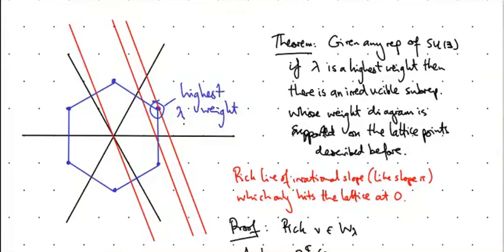Great. So what I want to use this for is to prove the uniqueness of the irreducible subrepresentation with a given highest weight. In other words, we want there to be only one possible subrepresentation with a given highest weight.